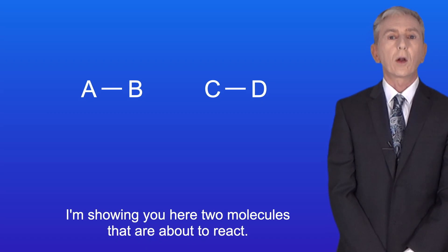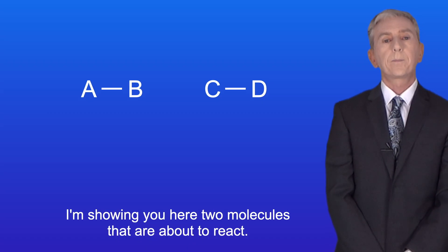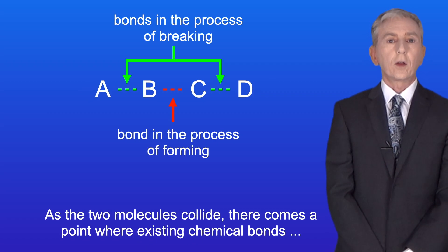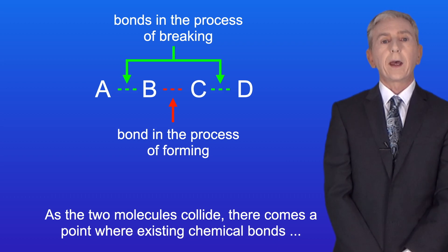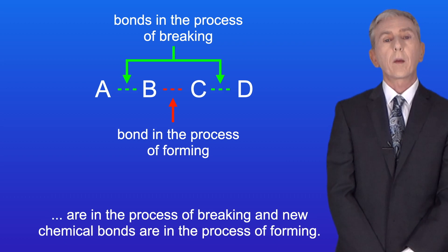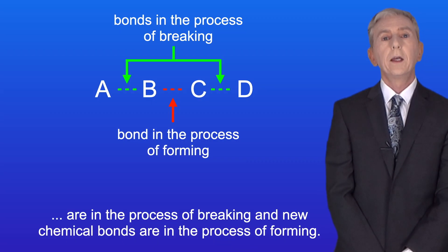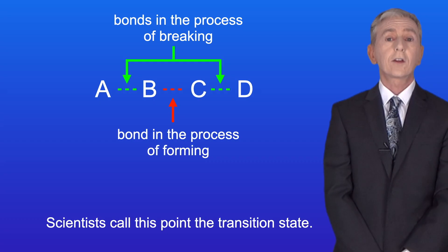I'm showing you here two molecules that are about to react. As the two molecules collide, there comes a point where existing chemical bonds are in the process of breaking and new chemical bonds are in the process of forming. Scientists call this point the transition state.